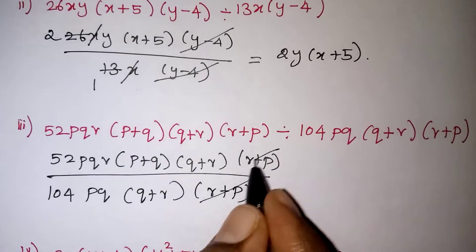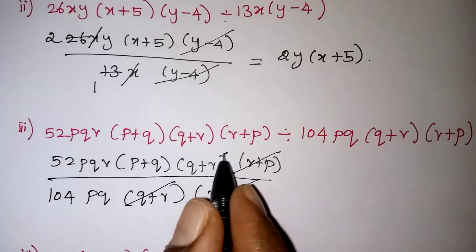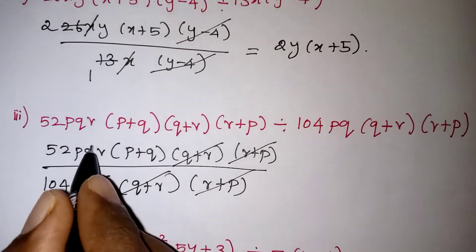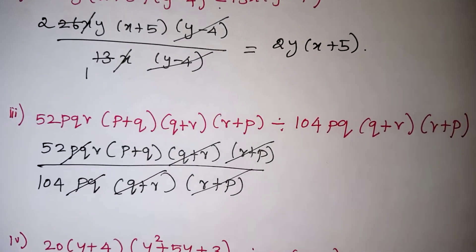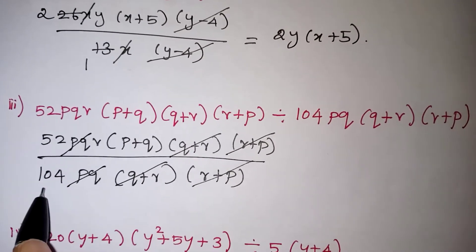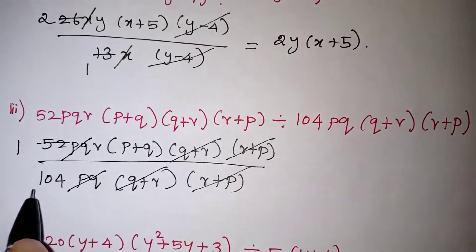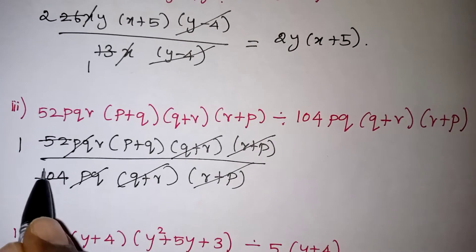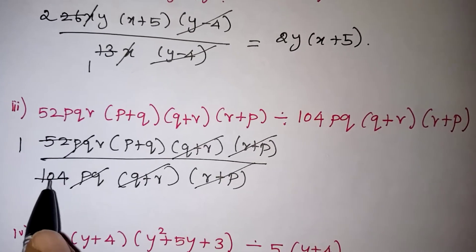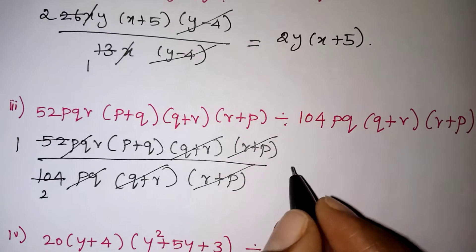So (r + p) and (r + p) will get cancelled, (q + r) and (q + r) will get cancelled, pq and pq also will get cancelled. So here 52 and 104 is given, 52 one time, 52 two times. Inside the 104 we have 2 times 52, so 52 twos are 104 we can say.